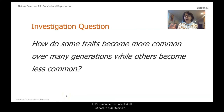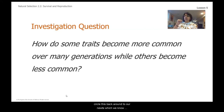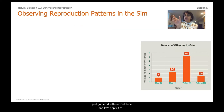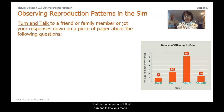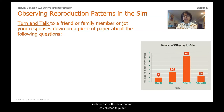Let's remember we collected all of this data to find a response to our investigation question: how do some traits become more common over many generations while others become less common? We're trying to circle this back around to our newts, which we know became more poisonous over time, and we're trying to understand how and why that happened. Let's take the data we gathered with our australobes and apply it to this situation through a turn and talk.